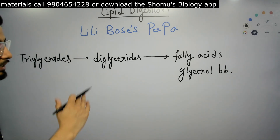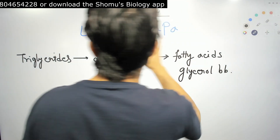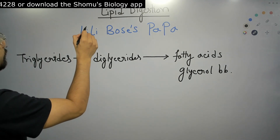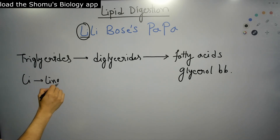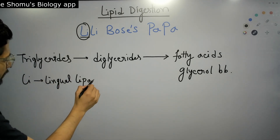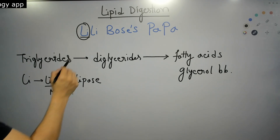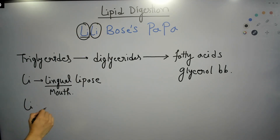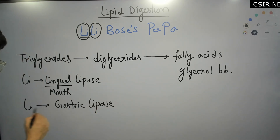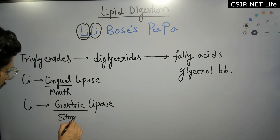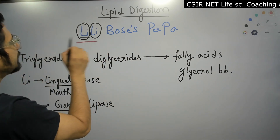For remembering the sequence, we use the mnemonic. 'Li' stands for lingual lipase — 'lingual' means it is present in our mouth. The second 'Li' stands for gastric lipase — 'gastric' means it is present in the stomach. So from 'Lily' we get lingual lipase and gastric lipase.